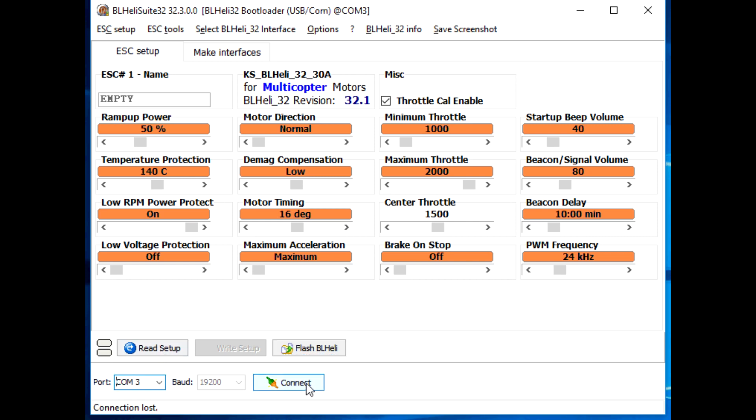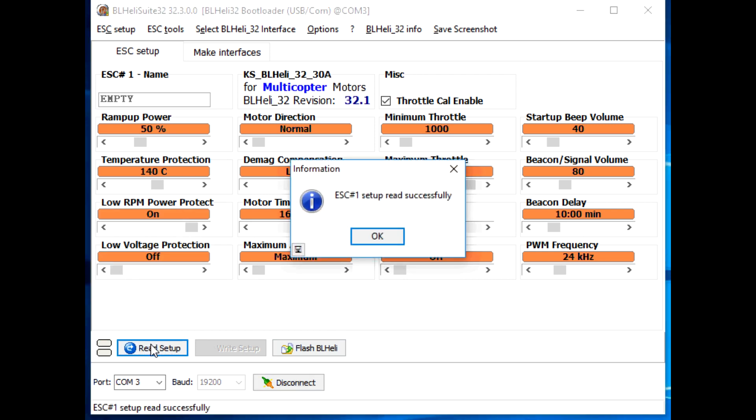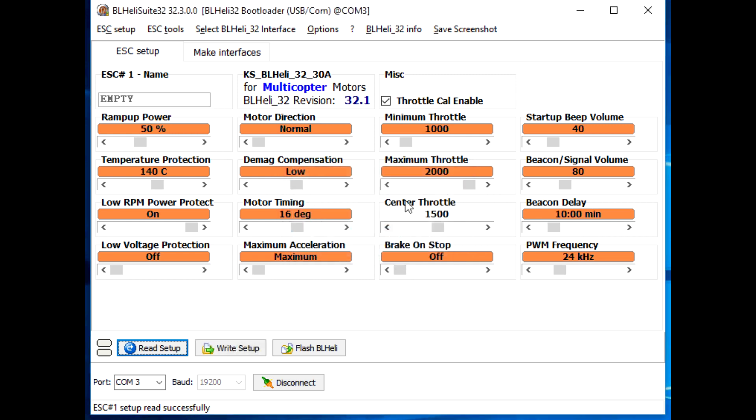So then you just connect. And there it is. You read the setup. Since it's only one ESC, that's why it only says ESC1. But on a FC, you'll show four ESCs and you get a little bit of a different screen there.